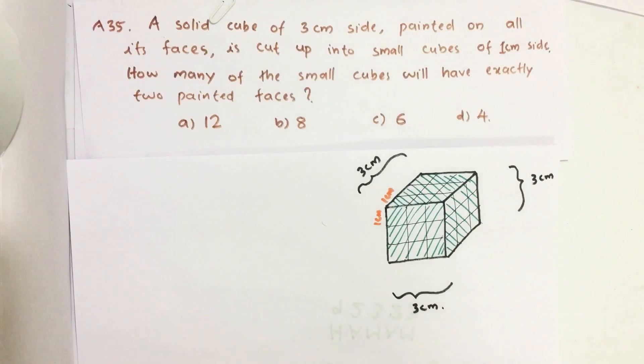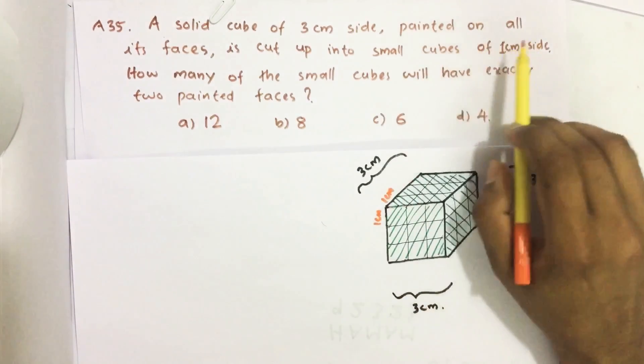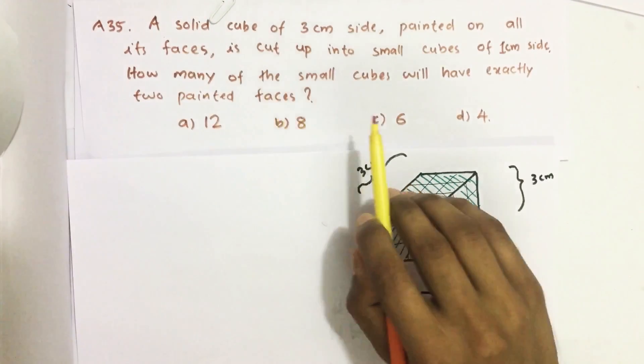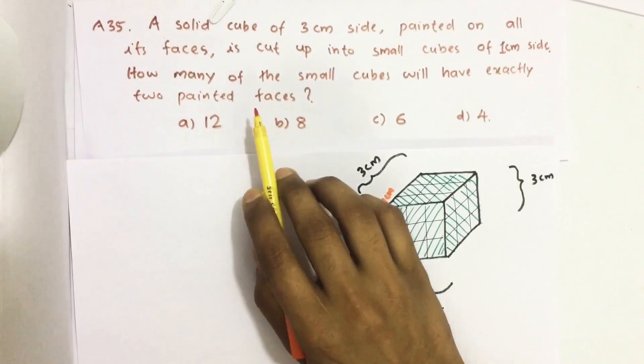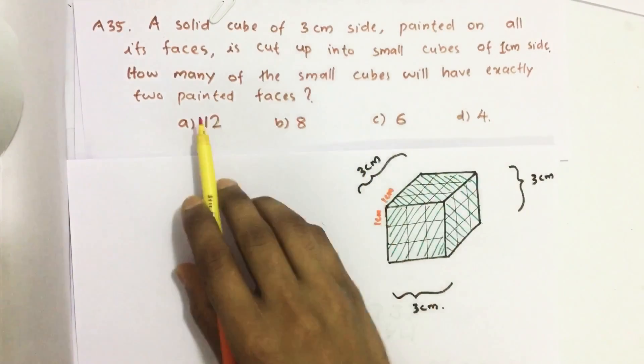A solid cube of 3 cm side painted on all its faces is cut up into small cubes of 1 cm side. How many of the small cubes will have exactly 2 painted faces?